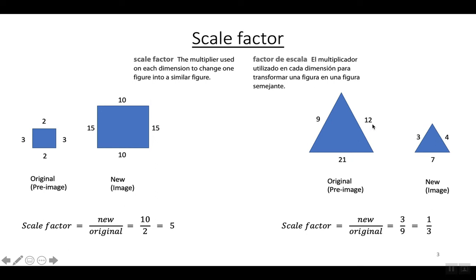If you know your times tables, you could easily tell that all the numbers are being divided by 3 — not multiplied, but divided by 3 — to get the new measurements. So if you look at the formula to get the scale factor: on the top you put the length of the new side, and on the bottom you put the length of the corresponding original side. If I'm comparing the side with 9 to the side with 3, because those two sides are corresponding, I put the 3 on the top and the 9 on the bottom. So my scale factor is 3 to 9, which simplifies to 1 over 3 by dividing top and bottom by 3.